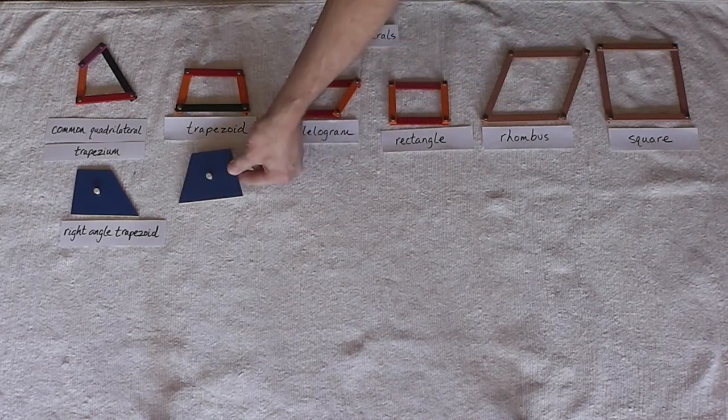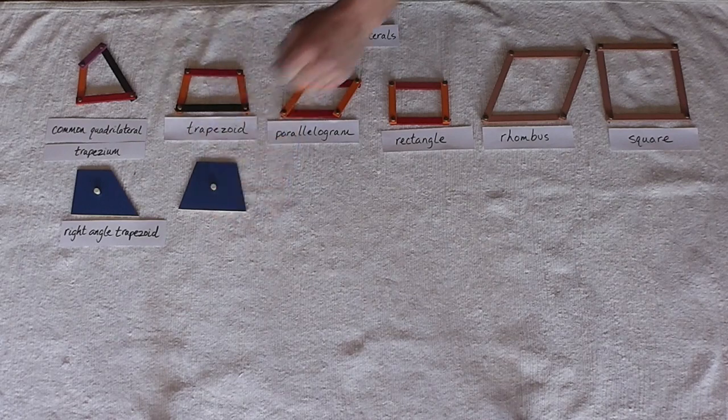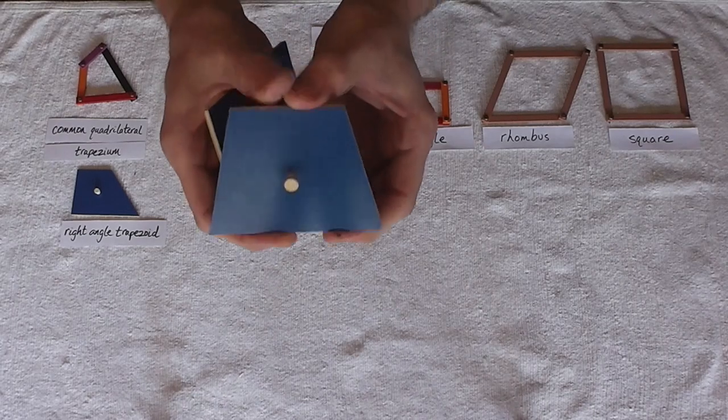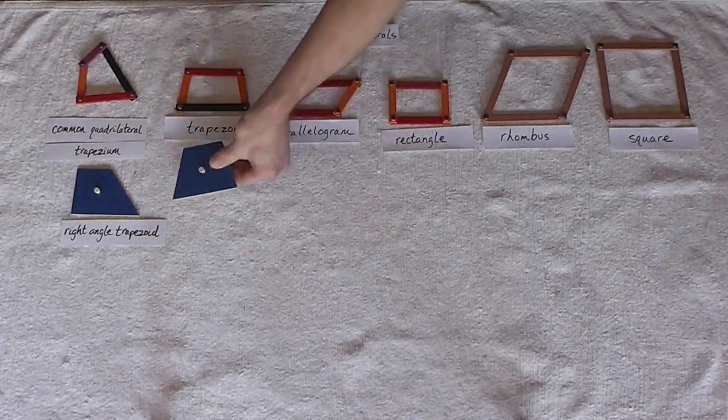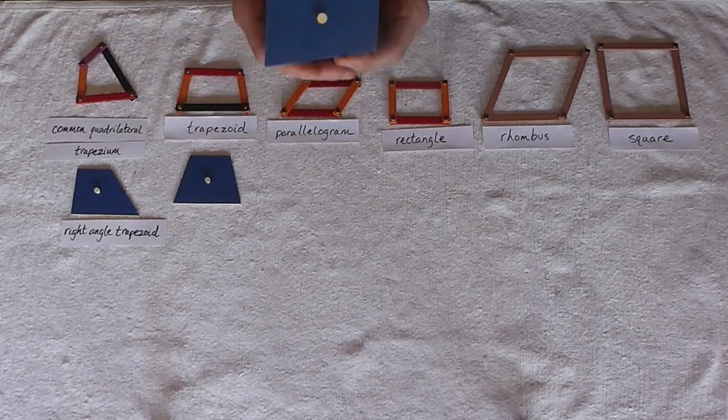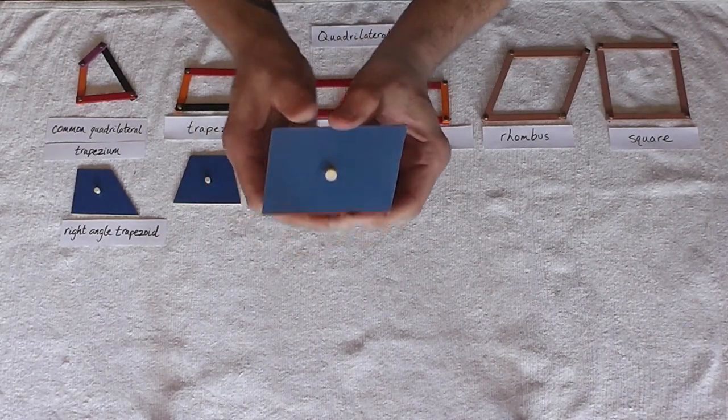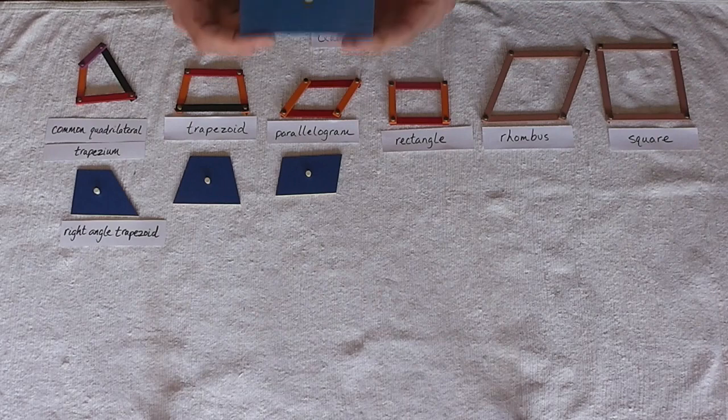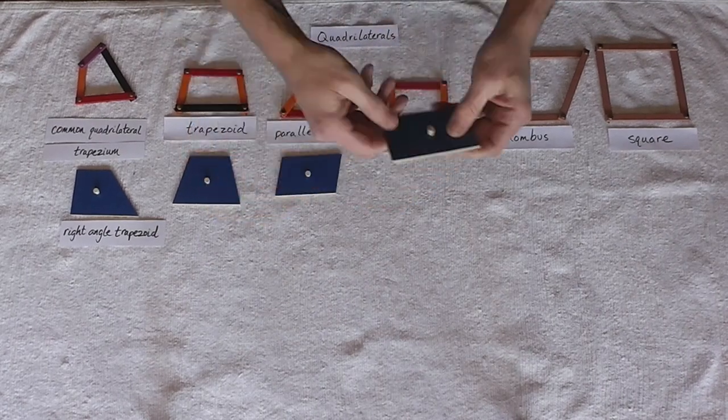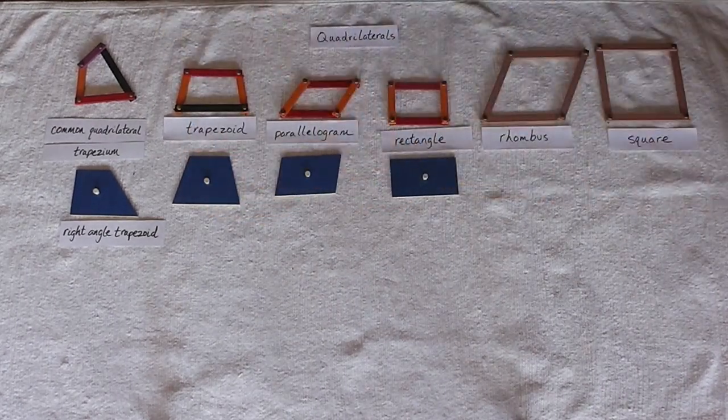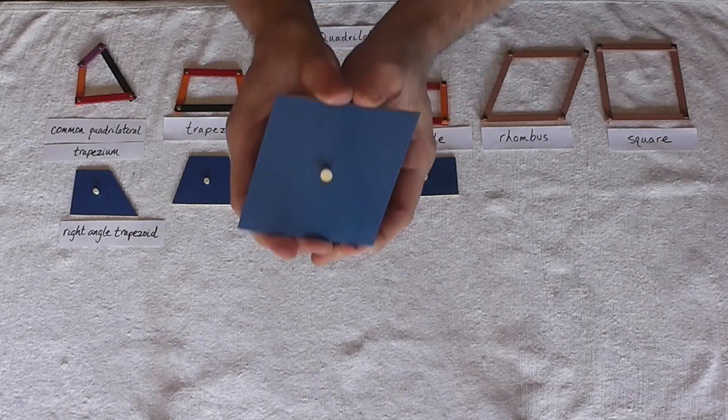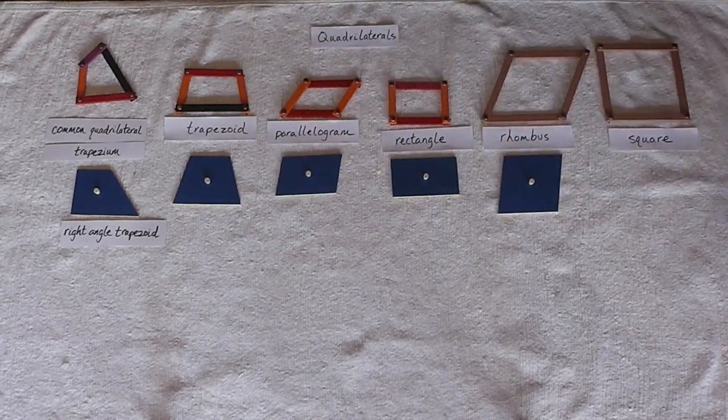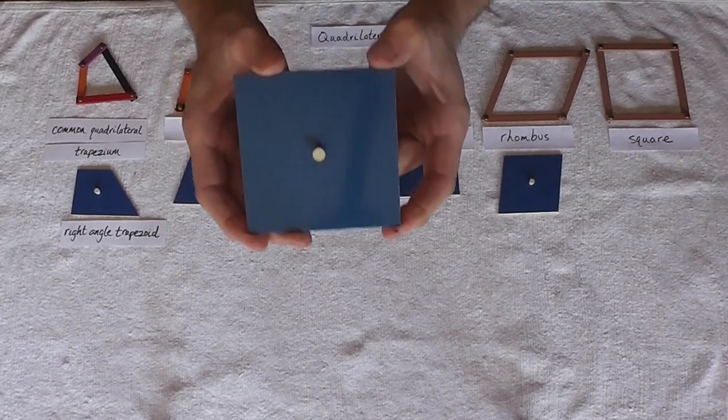Here's our trapezoid. And let me show that to the camera a little bit. Here's our trapezoid. Here's our parallelogram. Here's our rectangle. Here's our rhombus. And here's our square.